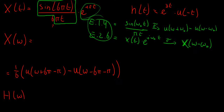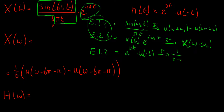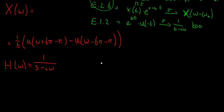For H(ω), we use rule 1.2, which states that e to the power of b·t multiplied with a negative step function, when Fourier transformed, gives one over (b − iω), but only if b is greater than zero. Since b = 3 in our function, we get H(ω) = 1/(3 − iω).